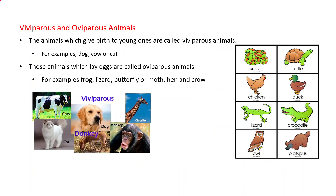Now let's discuss viviparous and oviparous animals. Animals which give birth to young ones are called viviparous animals. For example, dogs, cows, and cats are viviparous.